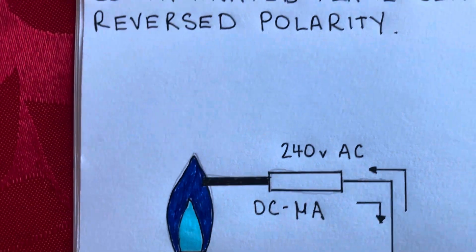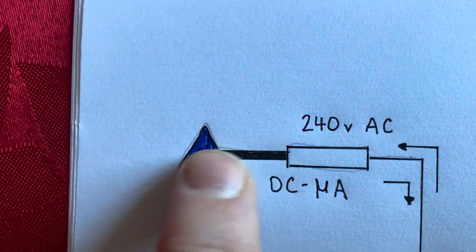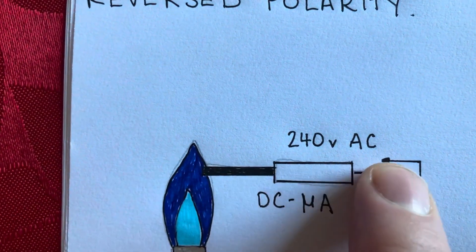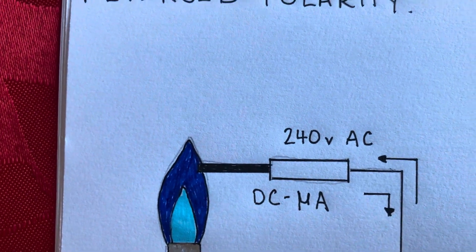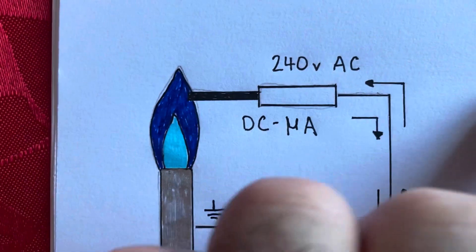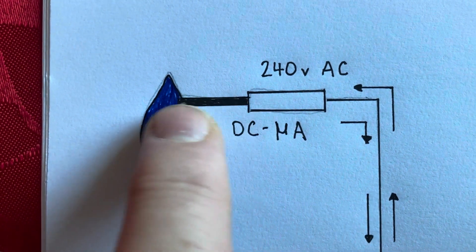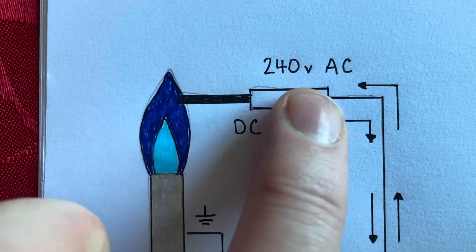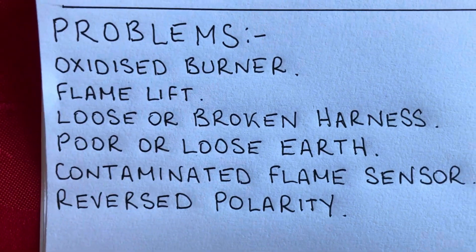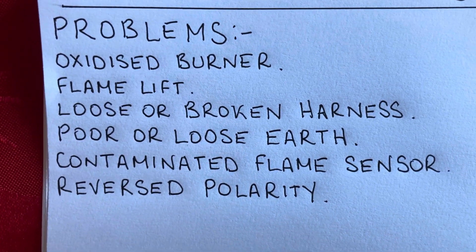A contaminated flame sensor — carbon buildup on it — is another issue. On a service you want to be cleaning that off. Carbon buildup means it can't send a good signal back down to the circuit board. You can test it with your multimeter on ohms and make sure you've got a good connection on your flame sensor.